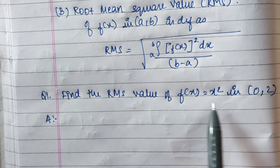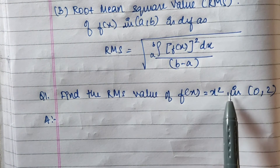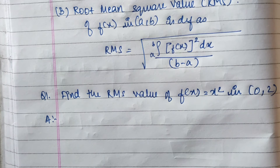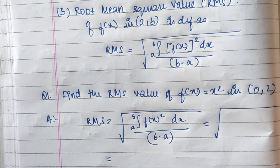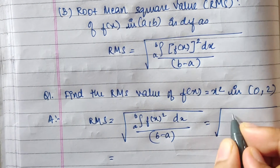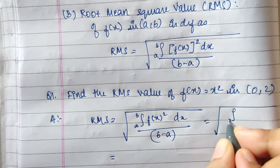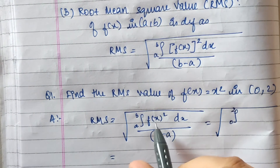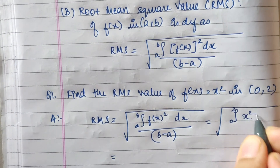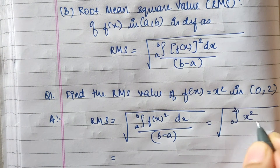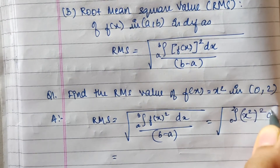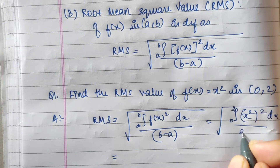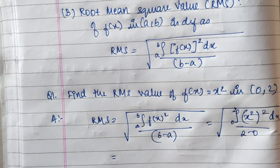Our first question: find the RMS value of the function f(x) = x² in the interval [0, 2]. We write down the formula and substitute: a = 0, b = 2, and f(x) = x². So f(x) squared is (x²)² = x⁴, and we divide by b − a = 2 − 0 = 2.